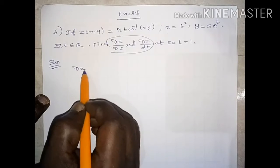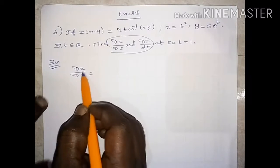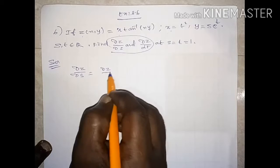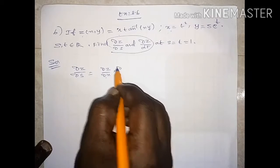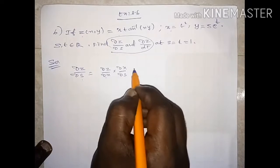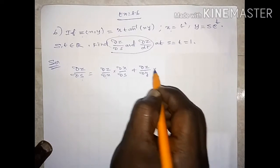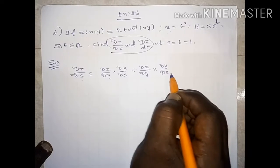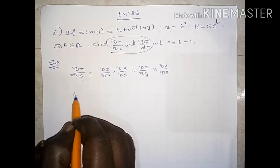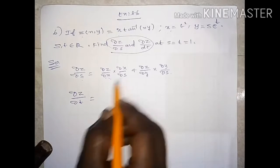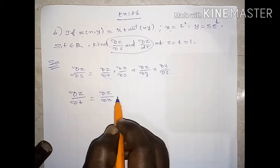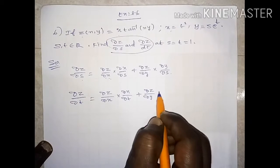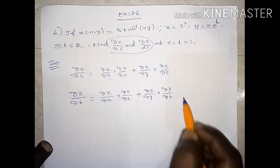To find the partial derivative value, the first formula is: dou z by dou s equals — first, z is a function, x is a function, y is a function. First, dou z by dou x, remaining in x, dou x by dou s, plus dou z by dou y, dou y by dou s. Similarly, dou z by dou t equals dou z by dou x times dou x by dou t, plus dou z by dou y times dou y by dou t.